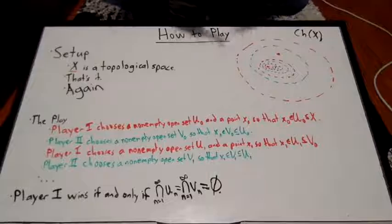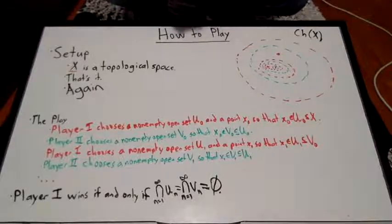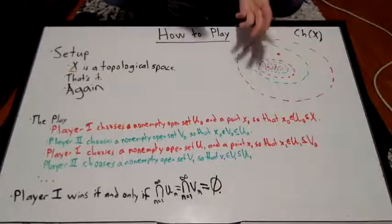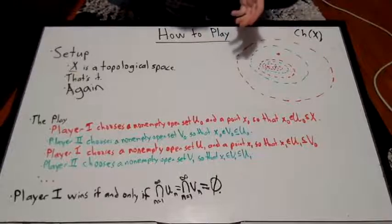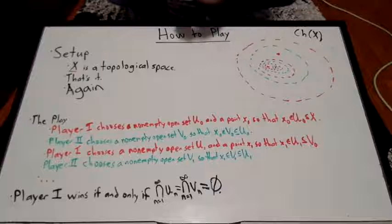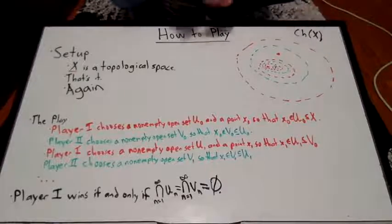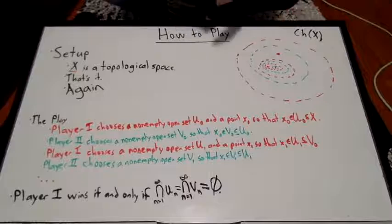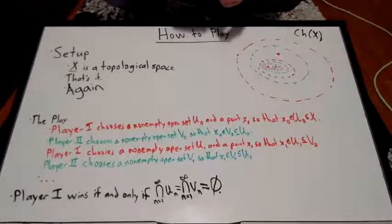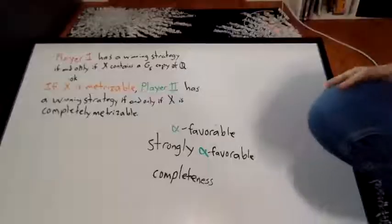Player 1 has some element of control, always, about the set that player 2 chooses. And as you would expect, this results in the class of sets for which player 2 has a winning strategy being more constrained in CH of X, the Shokei game, the strong Shokei game, being a bit more constrained than in just plain old BM of X.